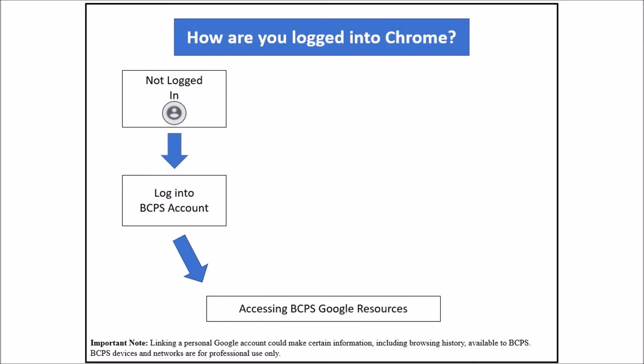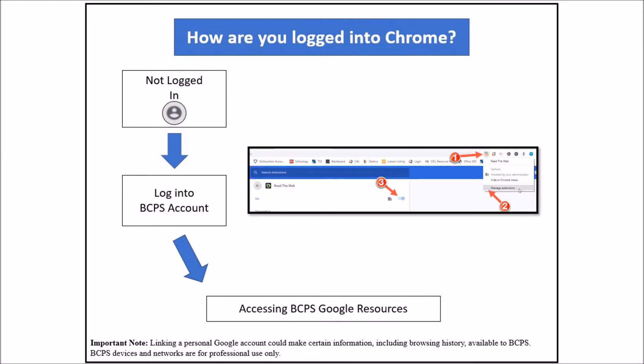At this point, you will see messages and possibly additional tabs appear. These correspond to extensions that are force-installed in the BCPS Google domain. Forced extensions include Kurzweil Read the Web, Microsoft Office, GoGuardian, and others. Individual extensions can be turned on and off by right-clicking on them and selecting manage extensions, then turning them off.